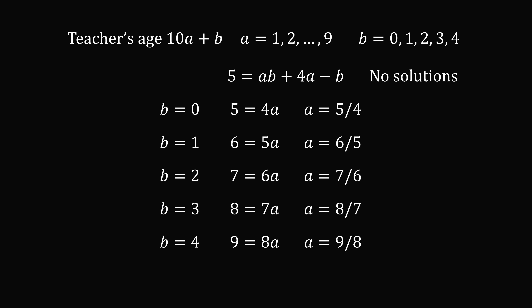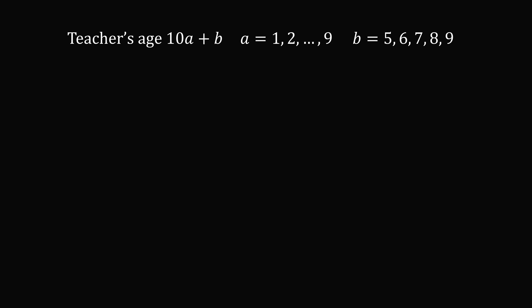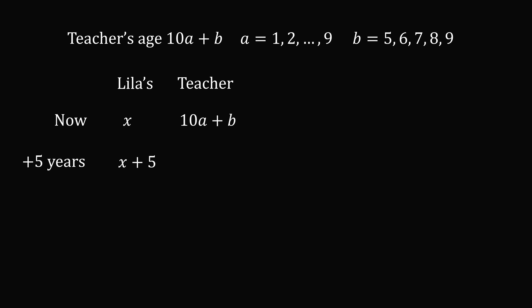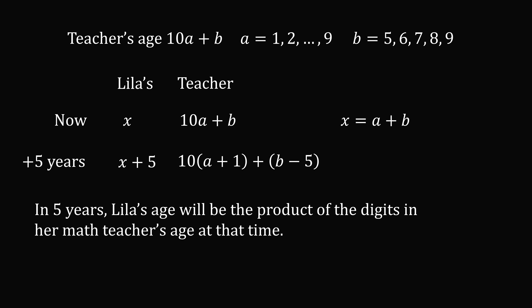So we eliminate that case and know that b must be a digit from 5 to 9. If Leela's age is x now, it'll be x plus 5 in five years. If the teacher's age is 10a plus b now, then in five years it'll be 10 multiplied by (a plus 1) plus (b minus 5). Leela's age is the sum of the digits in her math teacher's age, so x equals a plus b. In five years it is the product of the digits, so x plus 5 equals (a plus 1) multiplied by (b minus 5).